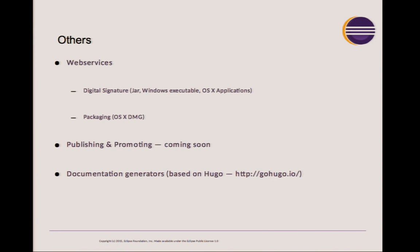We also provide digital signing services. We provide the facility to sign your JARs with the JAR signer mechanism from the JVM — a digital signature that is checked when a JAR is loaded, allowing the JVM to verify the JAR is properly signed. You can sign your JAR with our provided web service. We also provide the facility to sign Windows executables, so users won't get security warnings when running them. Any Eclipse product is signed with our certificate. We also sign Mac OS apps.